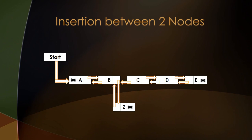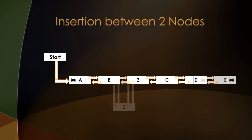Now we'll change the forward pointer of node Z to point to node C, since node C will be the next node for node Z. Lastly, we'll change the backward pointer of node C to point to node Z, since node Z will now be before node C rather than node B. This is how the linked list looks after node Z has been inserted between nodes B and C with all pointers properly arranged.